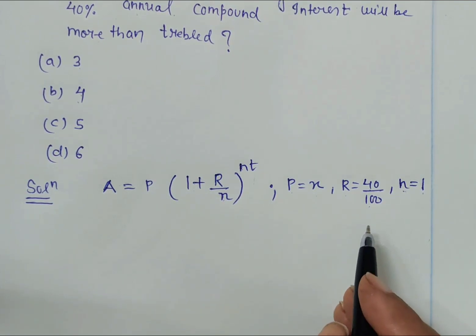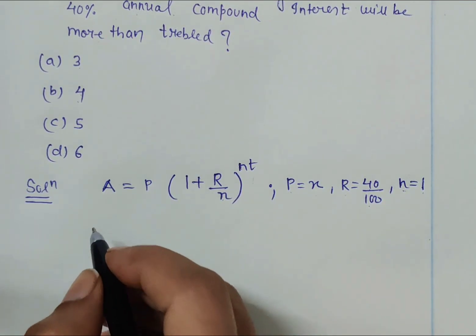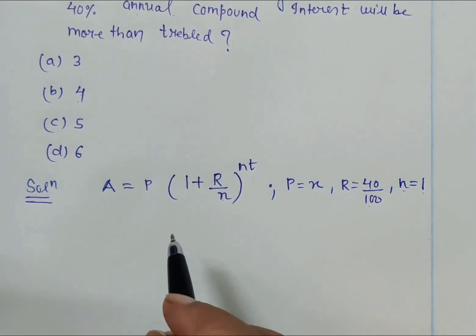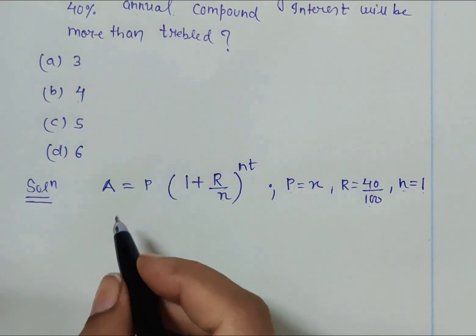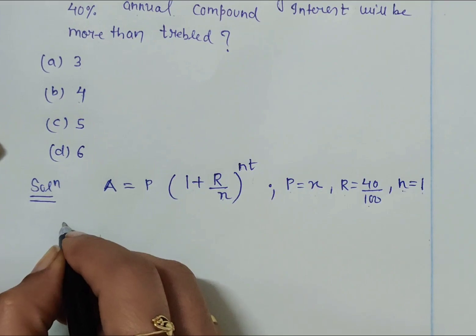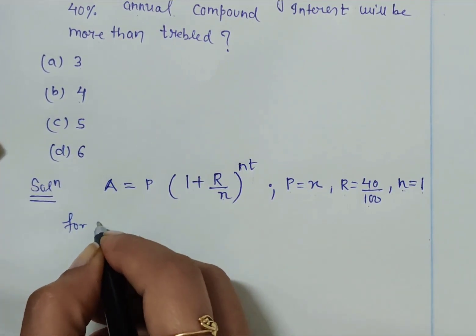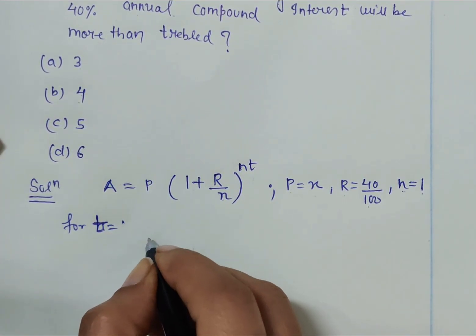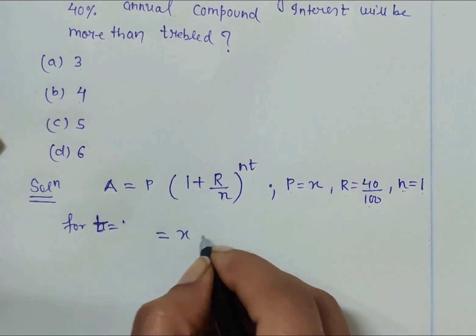Let us assume the principal amount be x and the rate of interest given is 40%. Let's substitute and get the solution for the number of complete years which results in compound interest more than tripled.